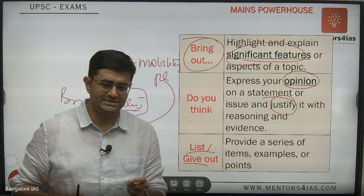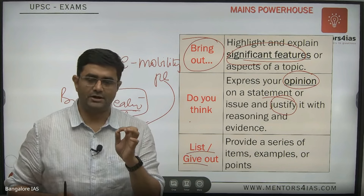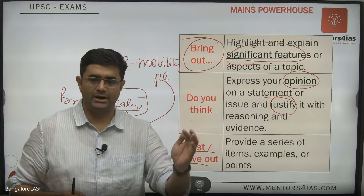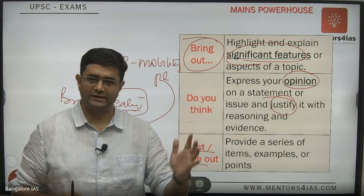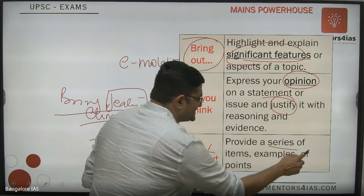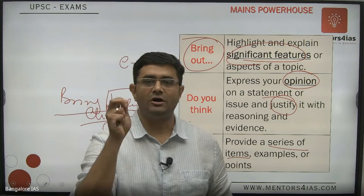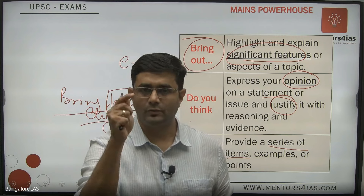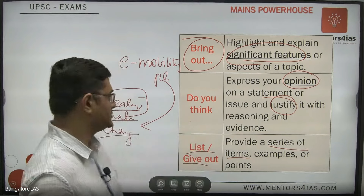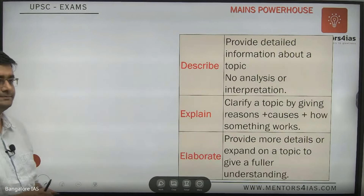Next is 'list out' or 'give out.' If a question asks you to list, you simply list the factors being asked — you don't have to elaborate or explain, just provide a series of items. For example: list out the causes of climate change — one, two, three, four — you simply list them. That is what 'list out' or 'give out' means.